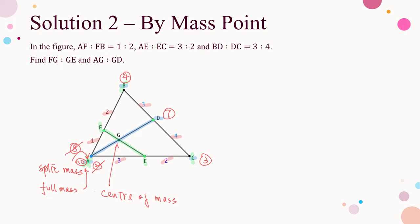Let me do a quick check for the total mass at G. From line segment AD, the mass of G comes from the full mass of A (10) and the mass of D (7), so the mass of G is 17. From line segment EF: the mass of F comes from the partial mass of A (8) and the mass of B (4), so the mass of F is 12. The mass of E comes from the partial mass of A (2) and the mass of C (3), so the mass of E is 5. The mass of G from line segment EF is 12 plus 5, which is 17 — the same as obtained from line segment AD.